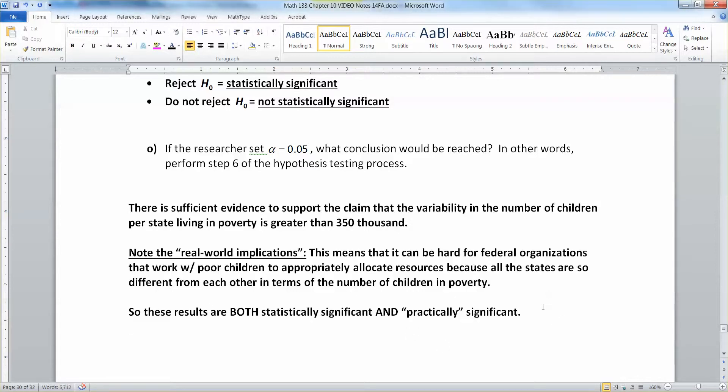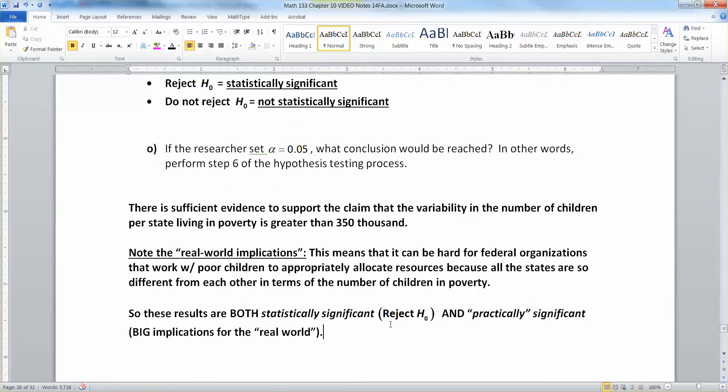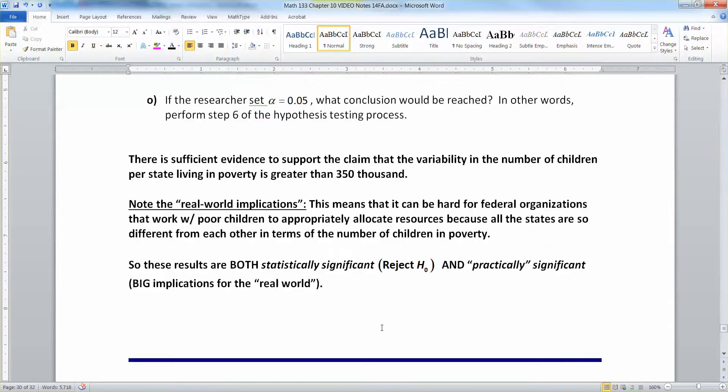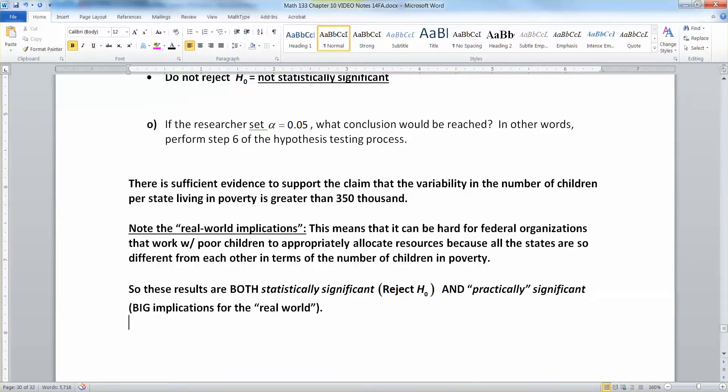So these results are both statistically significant and practically significant. I can't say the word significant, but there it is. Both statistically significant and practically significant because we rejected H naught. Statistically significant because we rejected H naught. It's practically significant because it has big implications for the real world. We're done with section 10.4. I'll see you back here for 10.5 for a quick recap of everything we've learned so far.